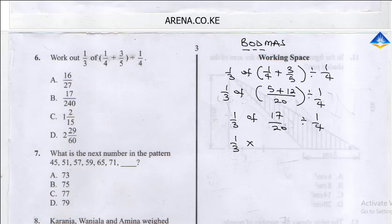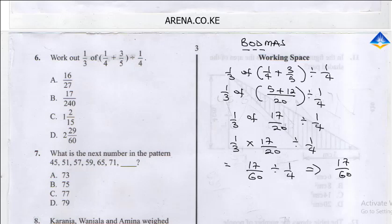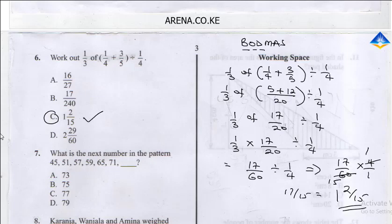Applying 'Of' next: 1/3 times 17/20 gives us 17/60. Now we divide: 17/60 divided by 1/4 is the same as 17/60 times 4/1. Simplifying: 4 into 60 gives 15, so this becomes 17/15. Converting 17/15 to a mixed number gives 1 and 2/15. Final answer: 1 and 2/15. The correct answer is C.